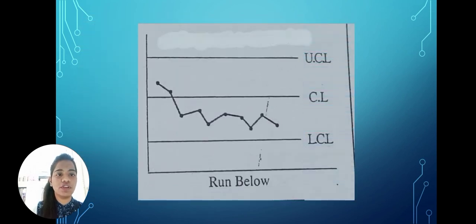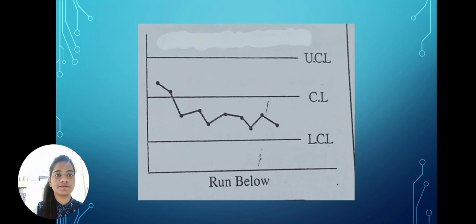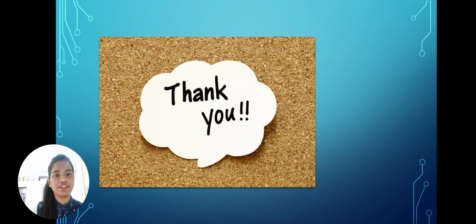Here is the run below graph. You can see that all the points are falling below the central line, so it is a run below graph. Thank you.